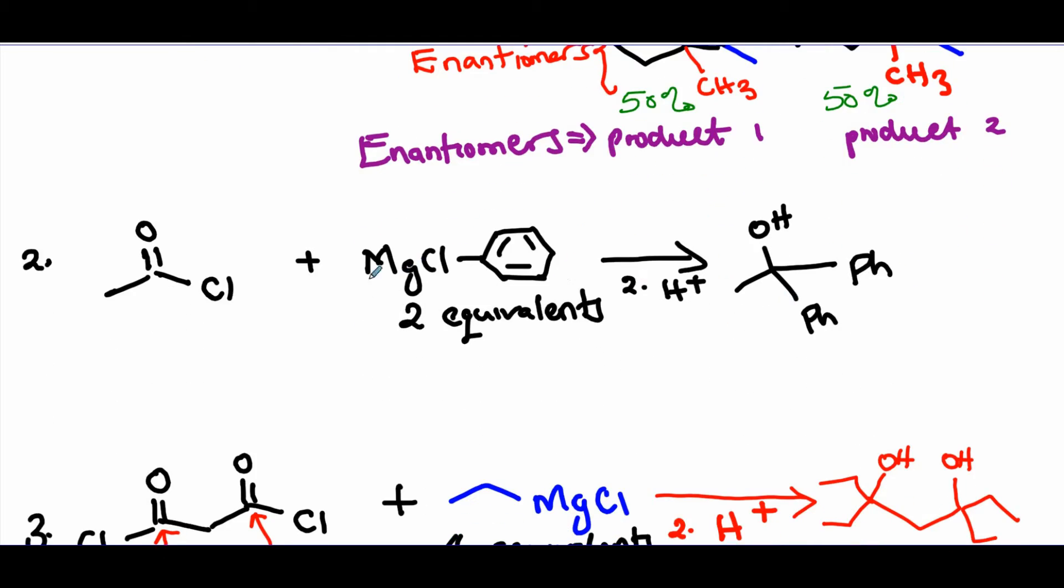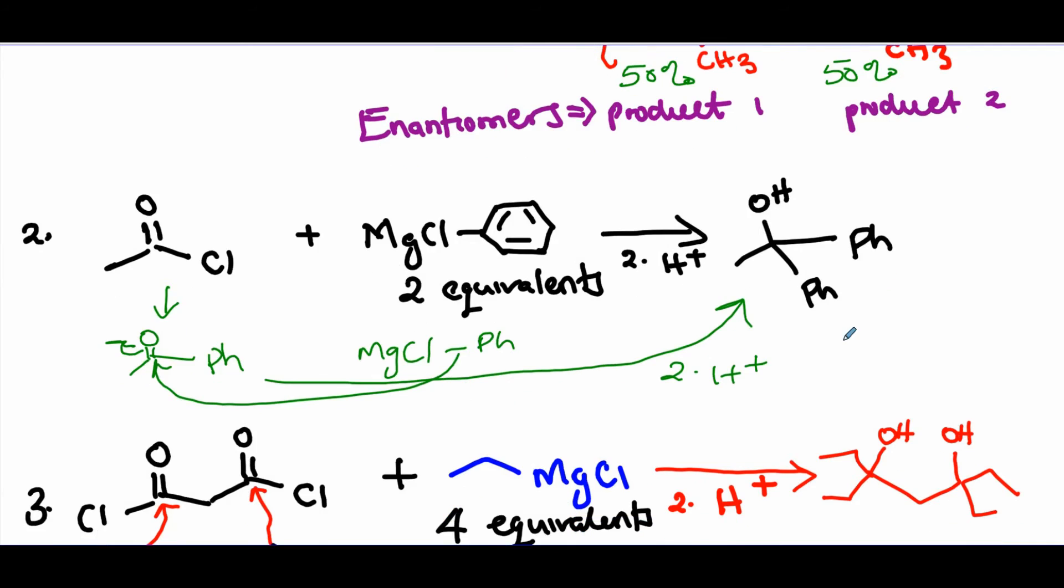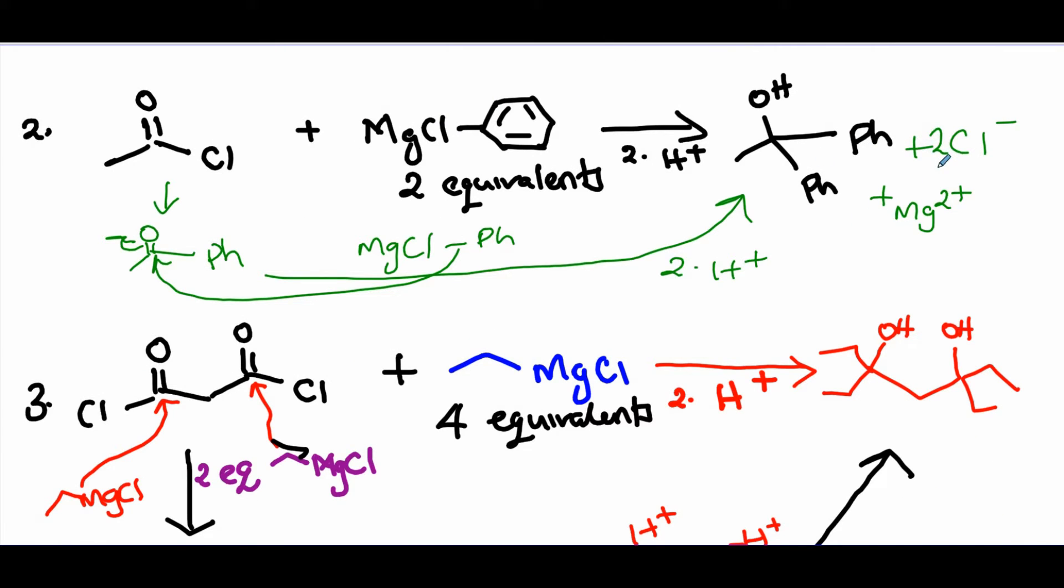And the next question, you have two equivalents of the same type of Grignard. So you expect that the first equivalent attacking here should eventually give you this. And then the second equivalent of the Grignard from there should give you the tertiary alcohol after quenching with an acid, just as we've been talking about. Only one product because this carbon is not asymmetric. You have some symmetry. You have two groups of the same type. Of course, the other byproducts will be 2Cl minus and Mg2 plus.